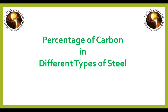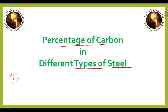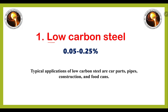Hello everyone. In this video we are going to discuss the percentage of carbon in different types of steel. We have chosen 20 types of steel. The first one is low carbon steel, which has a carbon percentage of 0.05 to 0.25.